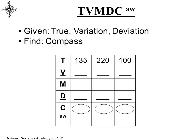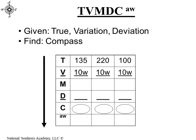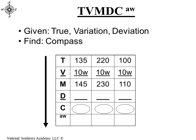Let's look at our first practical example. If we were given a true bearing or course, a given variation, and given deviation, how do we find compass? We're going to go from the top to the bottom, which means we're going to add westerly. The first piece of information we need is the variation. We go to our chart, and in this case our variation is 10 west — and it's going to be 10 west for all of those headings or bearings because the ship is in the same location. So we apply that and find our magnetic: 135 true becomes 145 magnetic, 220 true becomes 230 magnetic, 100 degrees true becomes 110 magnetic.